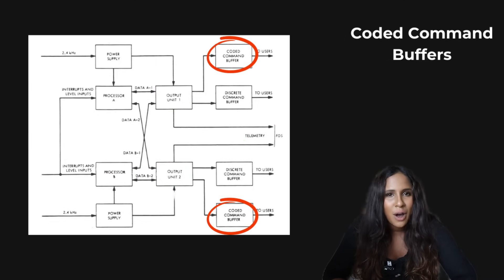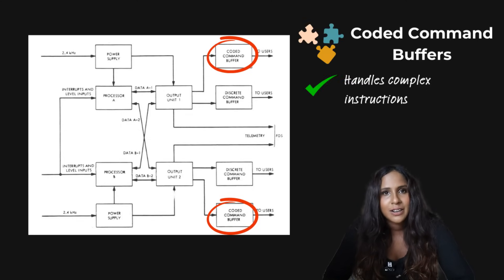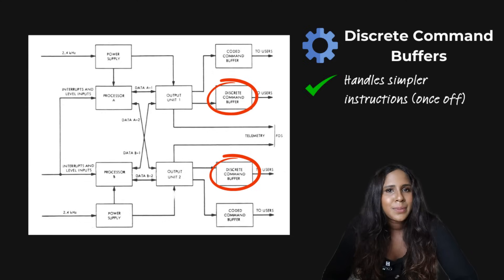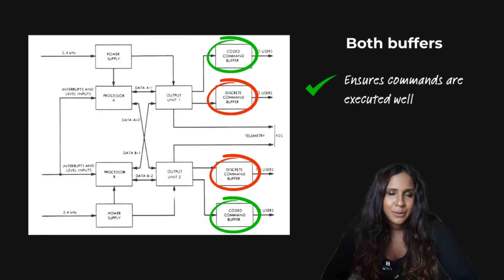You also get the command buffers or the coded command buffers. So this handles your more specific, very complicated, detailed instructions that require intricate execution. So think of it as a system's advanced set of instructions. In the discrete command buffer, manages your simpler one-off commands, like turning something on or off again. And both buffers are there to just ensure that all the commands are executed correctly, but also in the correct order.